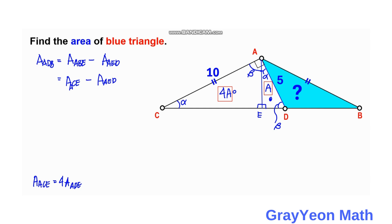So ADB, we are looking for this. So ACE is actually 4A minus this AED, which is A. So area of ADB is equal to 3A.